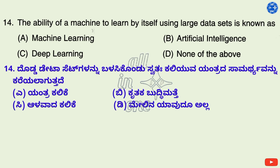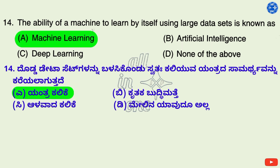Question 14. The ability of a machine to learn by itself using large data sets is known as — Options: A. Machine Learning, B. Artificial Intelligence, C. Deep Learning, D. None of the above. Right answer is A: Machine Learning.